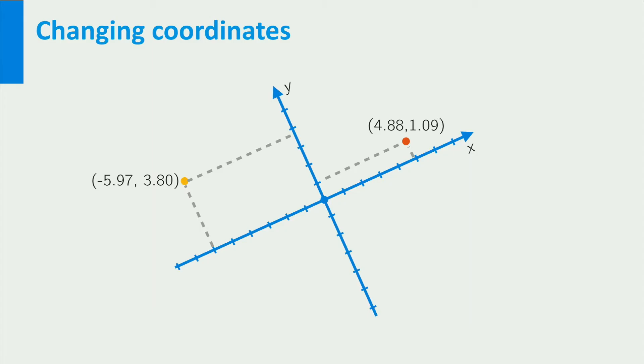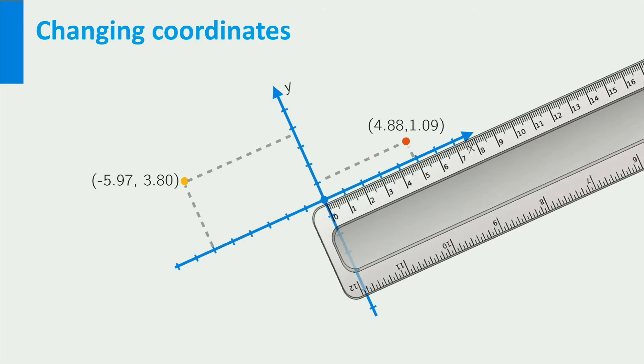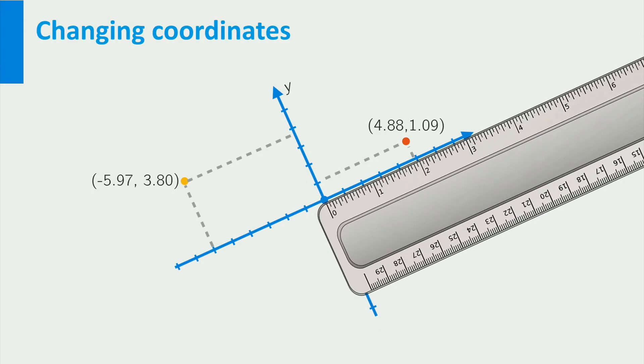But there is more. We can change the units, say, from centimeters to inches. And we can even flip the positive and negative sides of the axes.